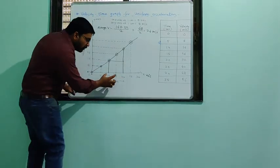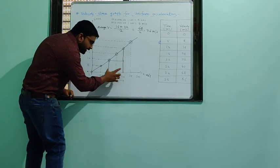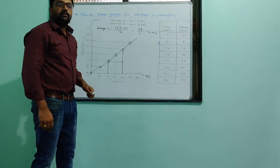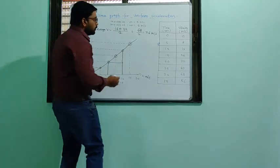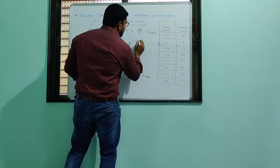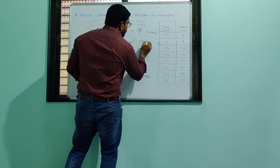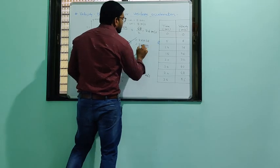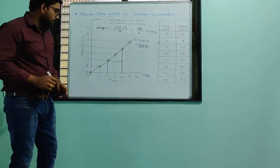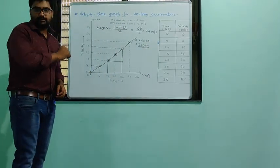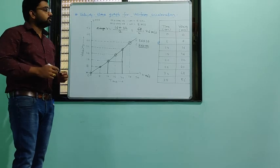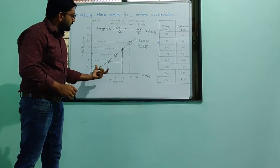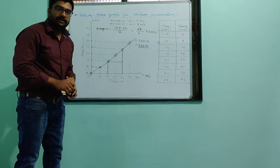They ask how much distance we cover from 10 to 20 seconds. In one second it covers 24 m, so for 10 seconds: distance = 24 × 10 = 240 meters. That is the distance the object covers in those 10 seconds.